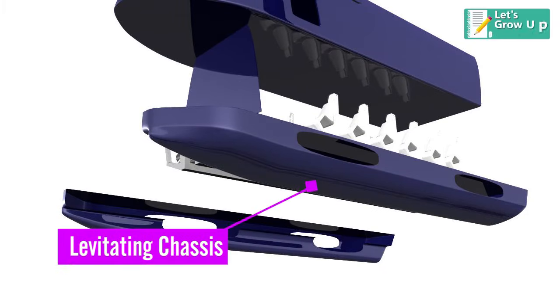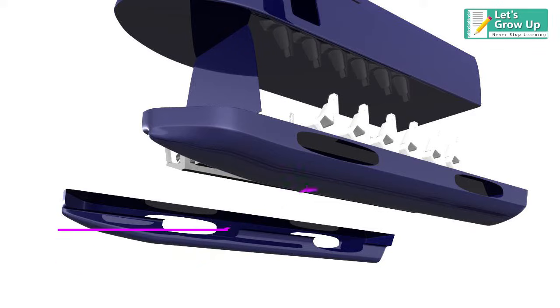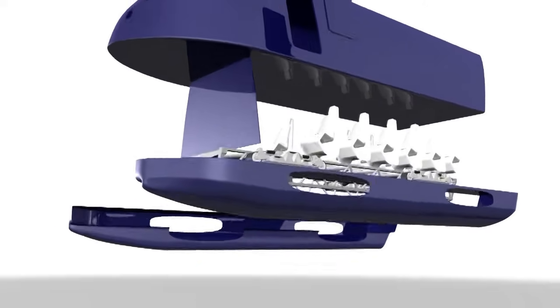The levitating chassis is made of structural aluminum and houses the propulsion system and magnets for levitation and guidance. Its design is similar to a Formula One car.